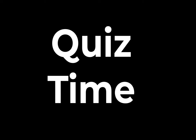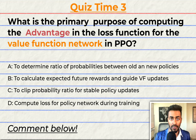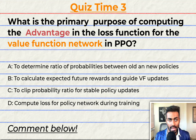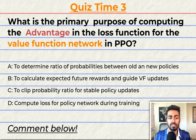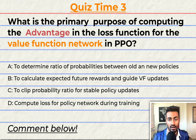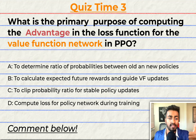Quiz time! This is going to be a fun one. What is the primary purpose of computing the advantage in the loss function for the value function network? A: to determine the ratio of probabilities between the old and new policies. B: to calculate the expected future rewards and guide updates to the value function. C: to clip the probability ratio and ensure stable policy updates. Or D: to compute the loss for the policy network during training. Comment your answer below and let's have a discussion. And if you haven't done so yet, please consider hitting that like button — thank you so much. That'll do it for quiz time in this video.